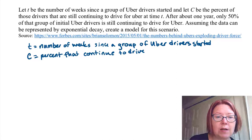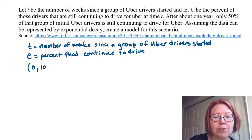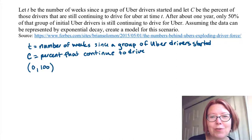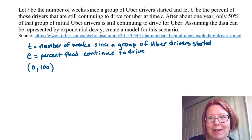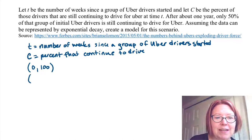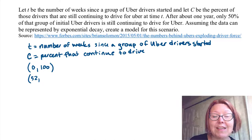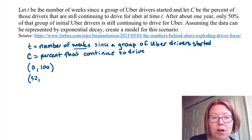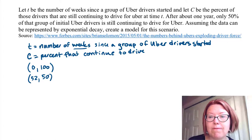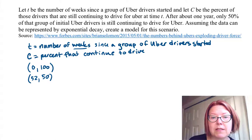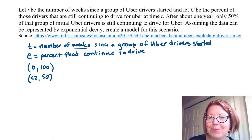So we actually have two data points. We have the point (0, 100) — that is, 100% of Uber drivers still drive when no time has gone by — and then we have a point at 52 weeks, because it's counted in weeks. So that's (52, 50). We can represent this data by exponential decay and we're going to create a model for this scenario.